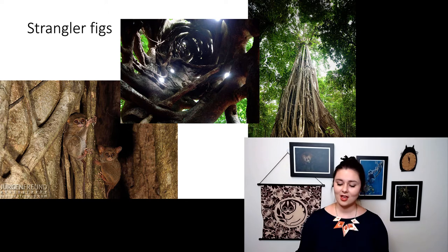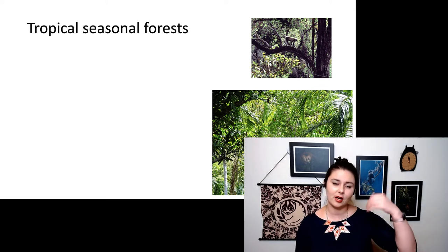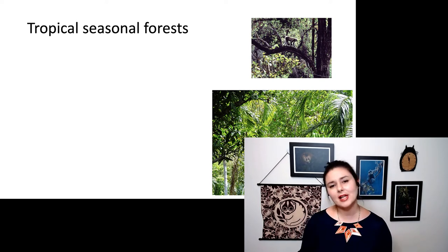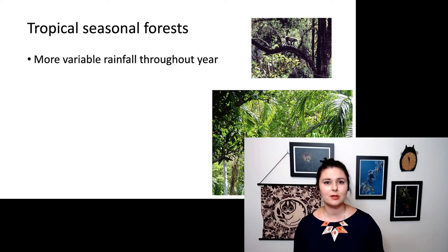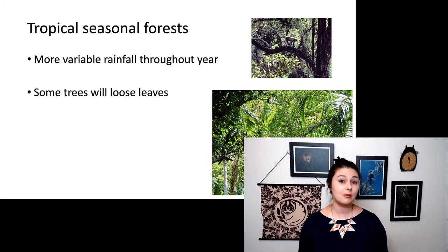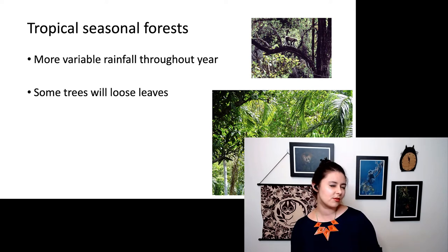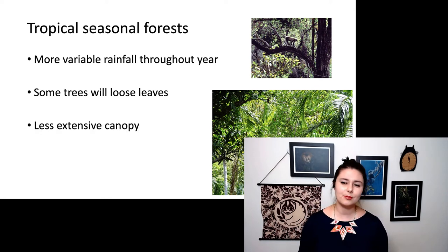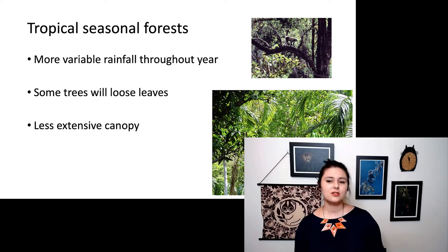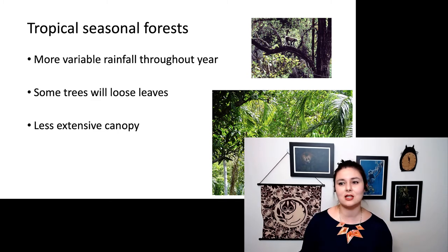We also have tropical seasonal forests. We're still in the tropics, but now there's a little less rain — rainfall is more variable. We start to see differences in plant life: some trees might lose their leaves, there's not going to be as much fruit year-round, and the canopy is probably a little less extensive. So we're going to see a little more light throughout, which you can see in these two pictures here.